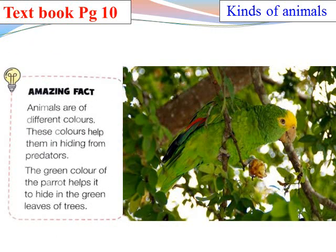There is an amazing fact: animals are found in different colors. These colors help them in hiding from predators. Predators are the animals that take smaller animals as food. For example, the green color of the parrot helps it hide among the green leaves of trees, so the predator cannot see them.